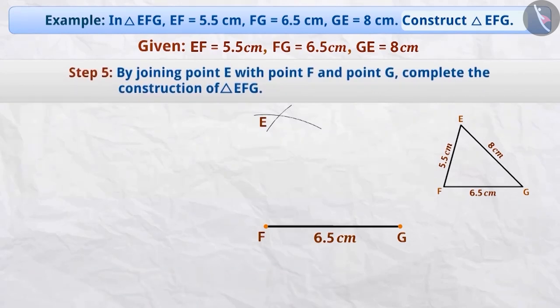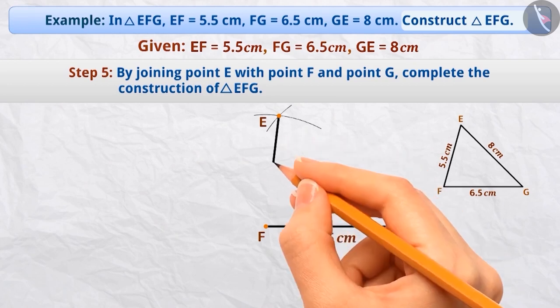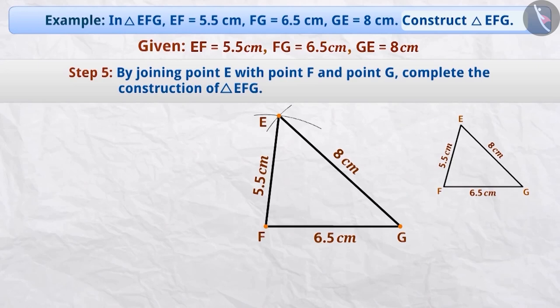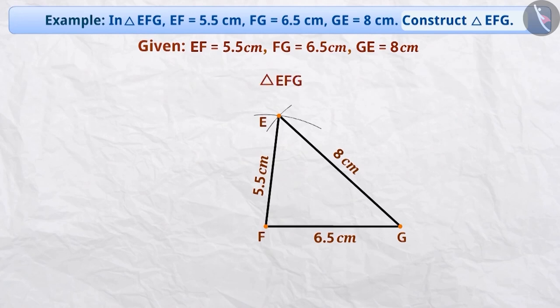Step 5: The two arcs intersect each other at point E. Now, we will join point E and point F — this is side EF of triangle EFG. Similarly, we will also join point E and point G, from which we get side EG of triangle EFG. In this way, we construct triangle EFG in which EF is equal to 5.5 cm, FG is equal to 6.5 cm, and GE is equal to 8 cm.